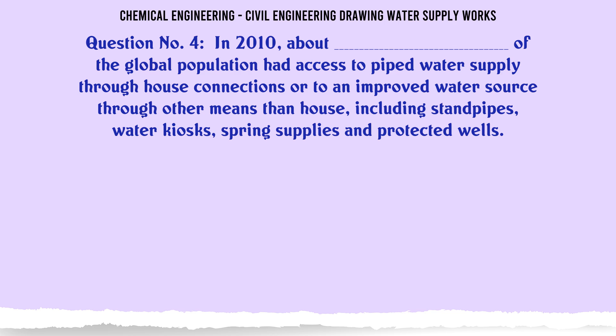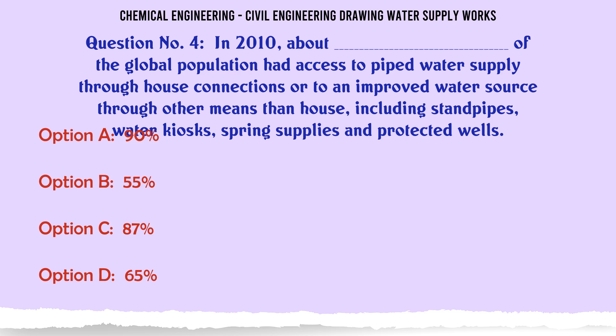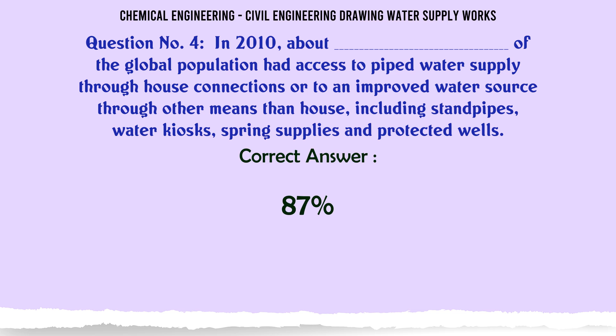In 2010, about what percentage of the global population had access to piped water supply through house connections or to an improved water source through other means, including standpipes, water kiosks, spring supplies, and protected wells? A. 90, B. 55, C. 87, D. 65. The correct answer is 87.